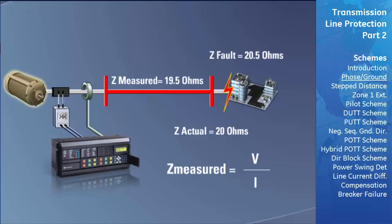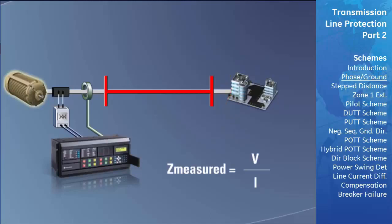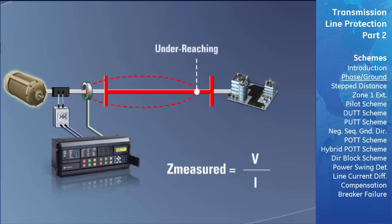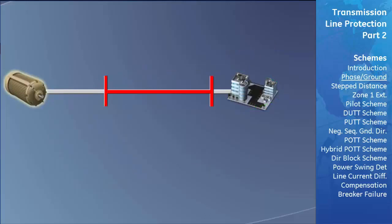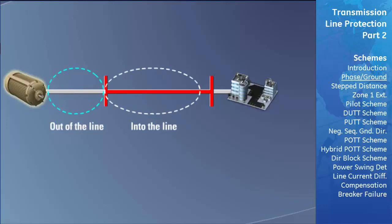Because of these inaccuracies, distance zones of protection are not set to stop right at the boundary of a transmission line. Distance relays use multiple zones, with some set short to protect only part of a line, and others set longer to protect the entire length plus some of the next adjacent line. Zones set to cover only part of the line are said to be underreaching, while zones set to cover more than that relay's line are said to be overreaching. Zones can also be programmed to protect in either the forward or reverse direction.